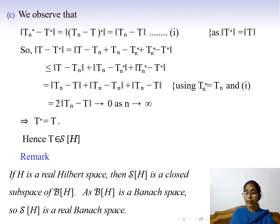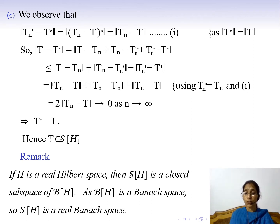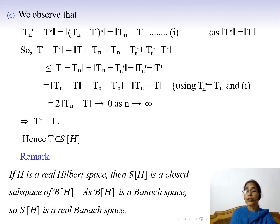If H is a real Hilbert space, then since S and T self-adjoint implies S + T is self-adjoint (result A), and α real with T self-adjoint implies αT is self-adjoint (result B), the set S(H) of self-adjoint operators is a subspace of B(H). From result C, S(H) contains its limit points, so S(H) is a closed subspace of B(H). Since B(H) is a Banach space and S(H) is a closed subspace, S(H) is itself a real Banach space.